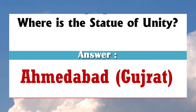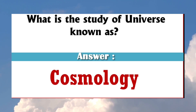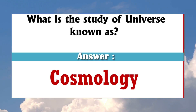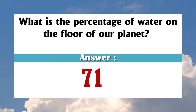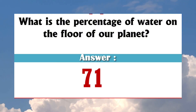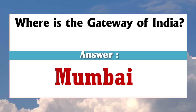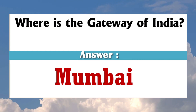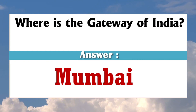Where is the Statue of Unity? Ahmedabad, Gujarat. What is the study of the universe known as? Cosmology. What is the percentage of water on the surface of the planet Earth? 71 percent. Where is the Gateway of India? Mumbai.